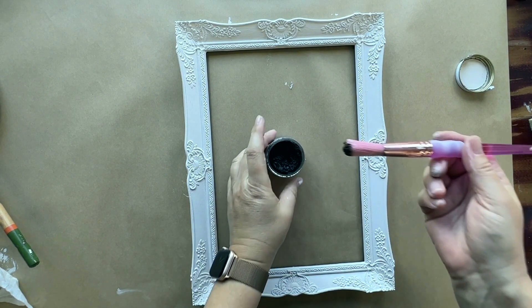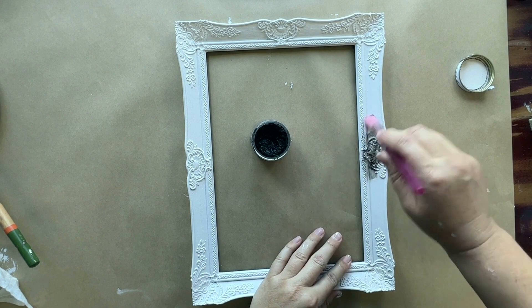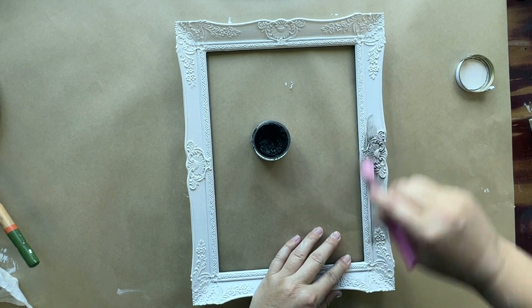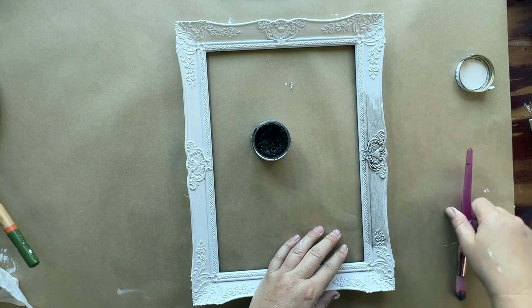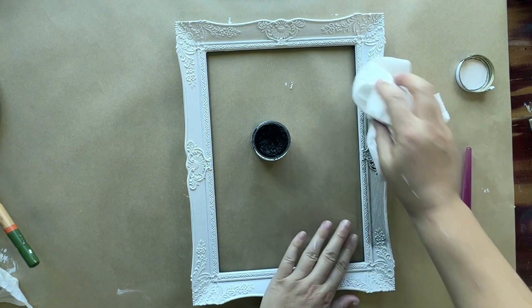Once the frame is completely dry, I'm adding some Fusion Ageing Furniture Wax on the frame with a brush, making sure I get into all the crevices and then wiping it back with a paper towel.